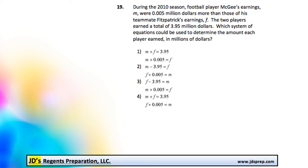This is problem number 19 from the June 2014 Algebra Regents exam. During the 2010 season, football player McGee's earnings, M, were $0.005 billion more than those of his teammate Fitzpatrick's earnings, F. The two players earned a total of $3.95 billion. We need to find out what system of equations could be used to determine the amount each player earned in millions of dollars.